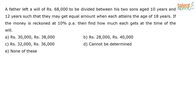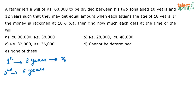The father is totally leaving 68,000 rupees for both his sons. One son is aged 10 years and the other is aged 12 years. The first son will become 18 years in 8 years. The second son will become 18 years in 6 years. I am assuming he is giving X rupees to his first son and 68,000 minus X to his second son. This money is put in the bank at 10% per annum, and when both children respectively become 18 years, they will get the same amount.